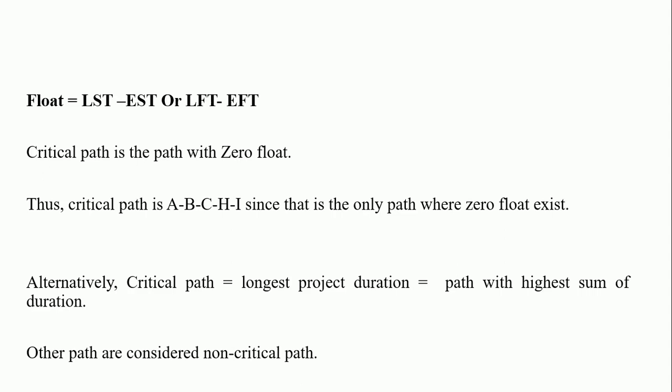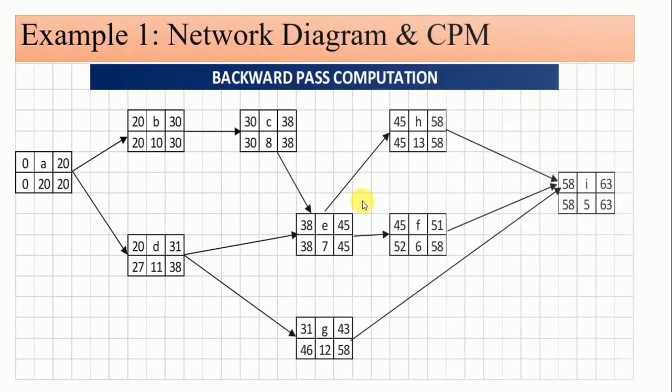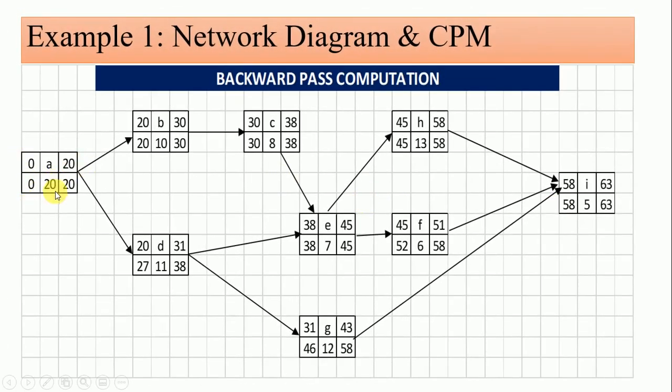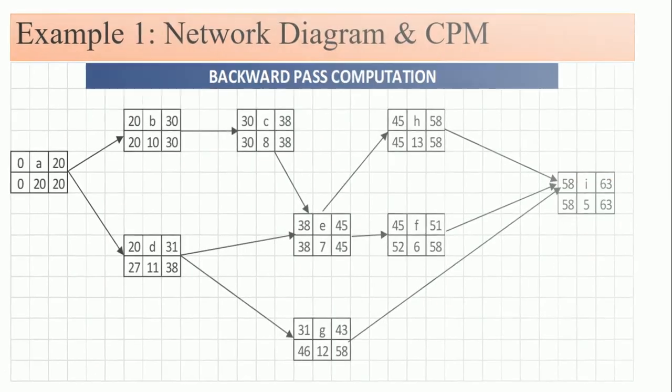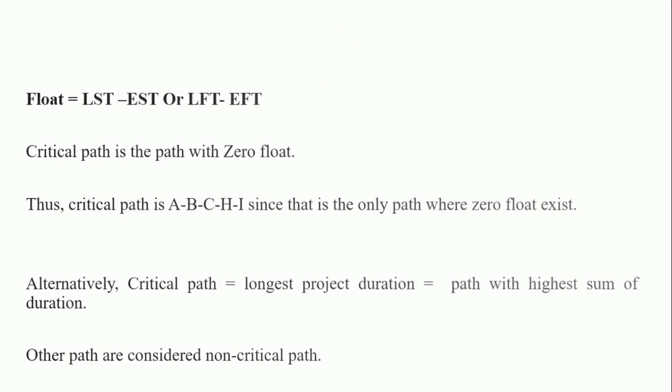Like I've explained earlier, the critical path has zero float. You calculate the differences and get zeros throughout the path. So, the path with zero float is called the critical path.